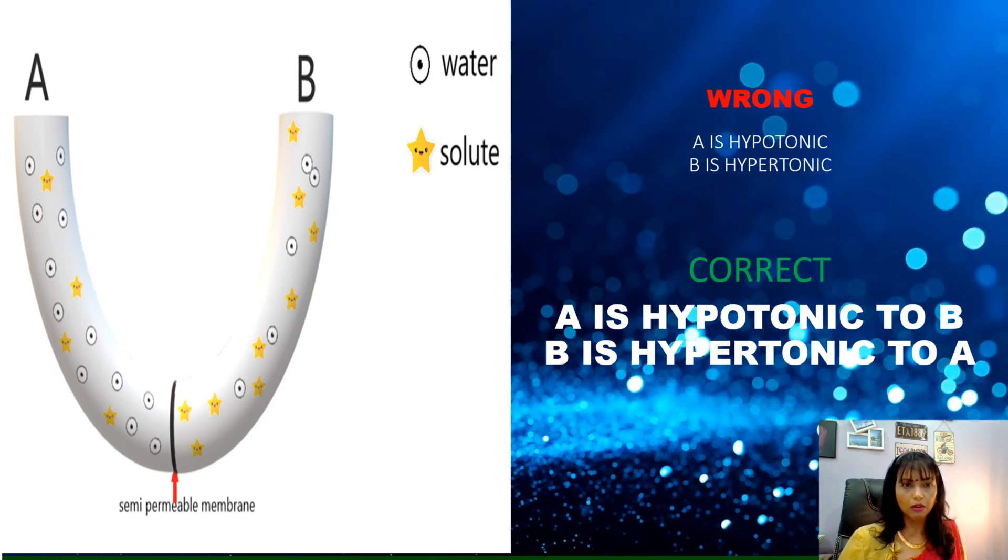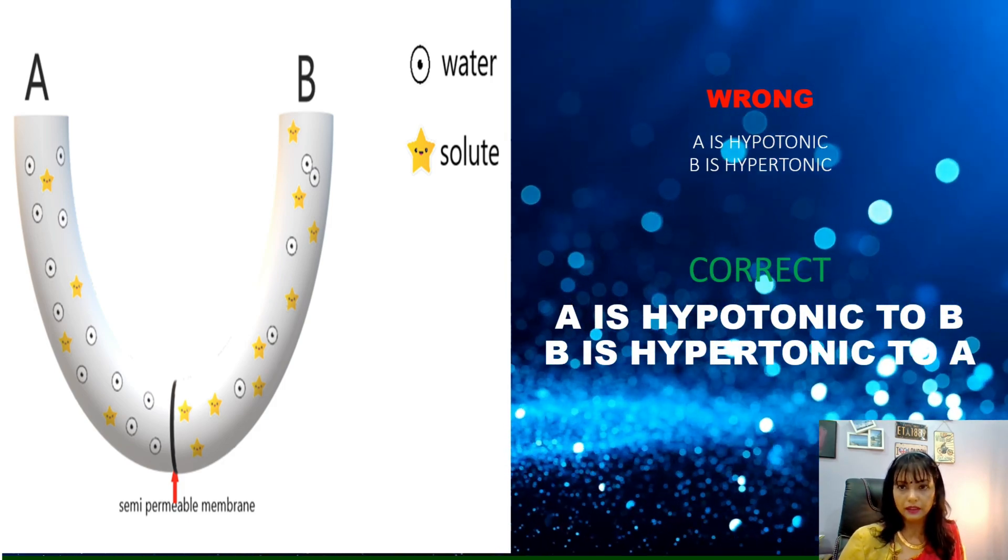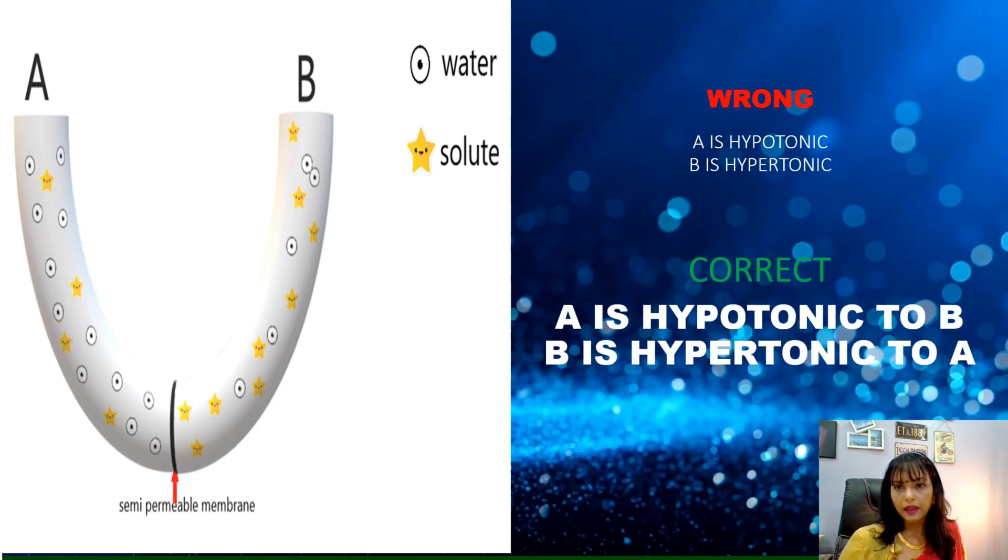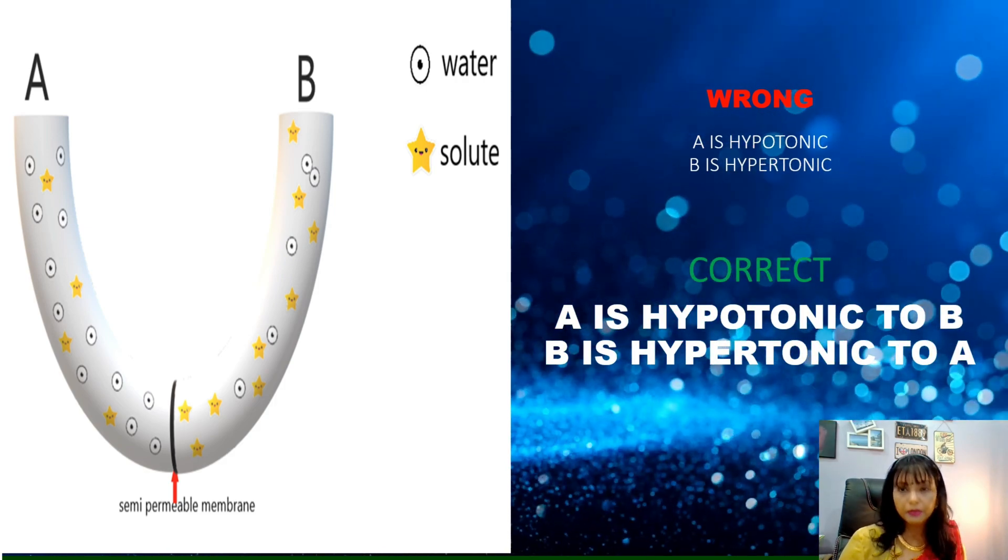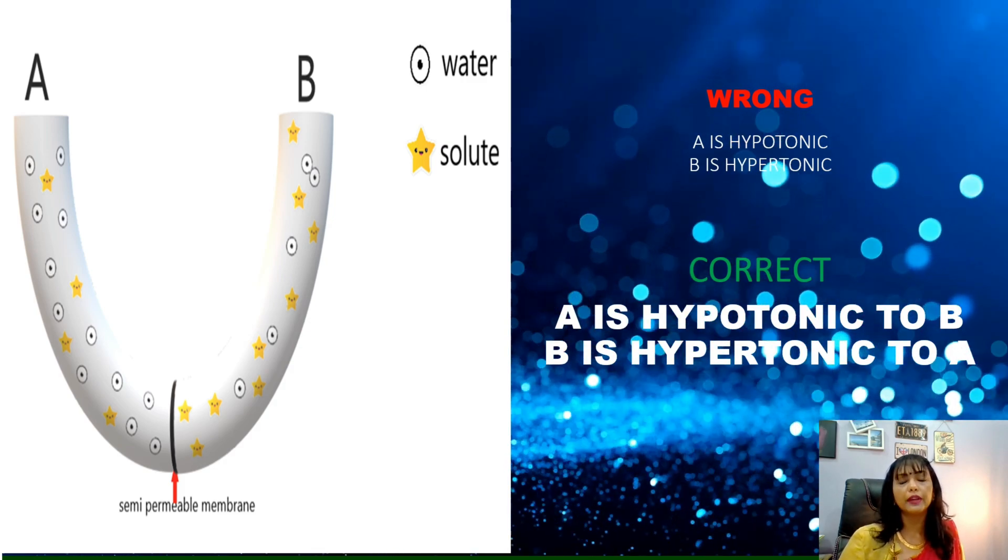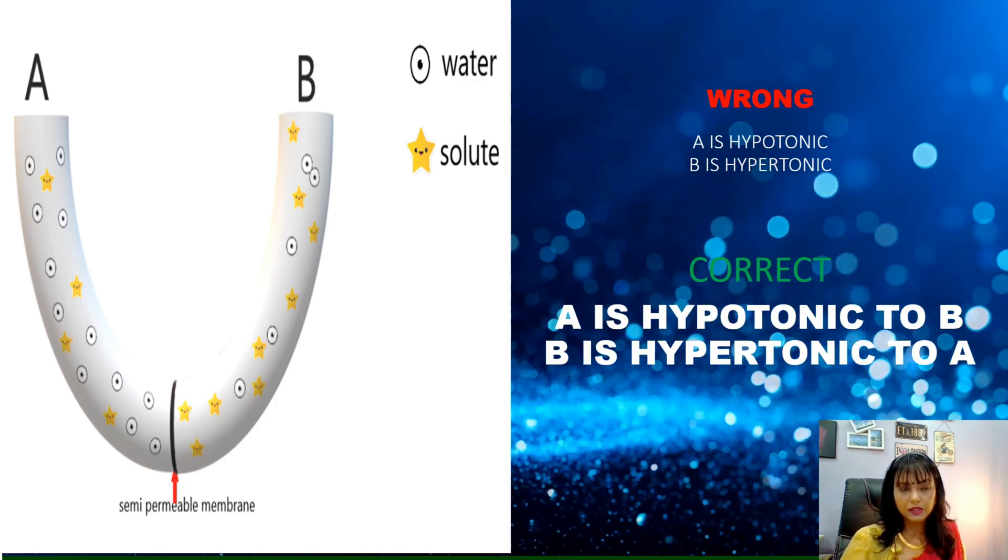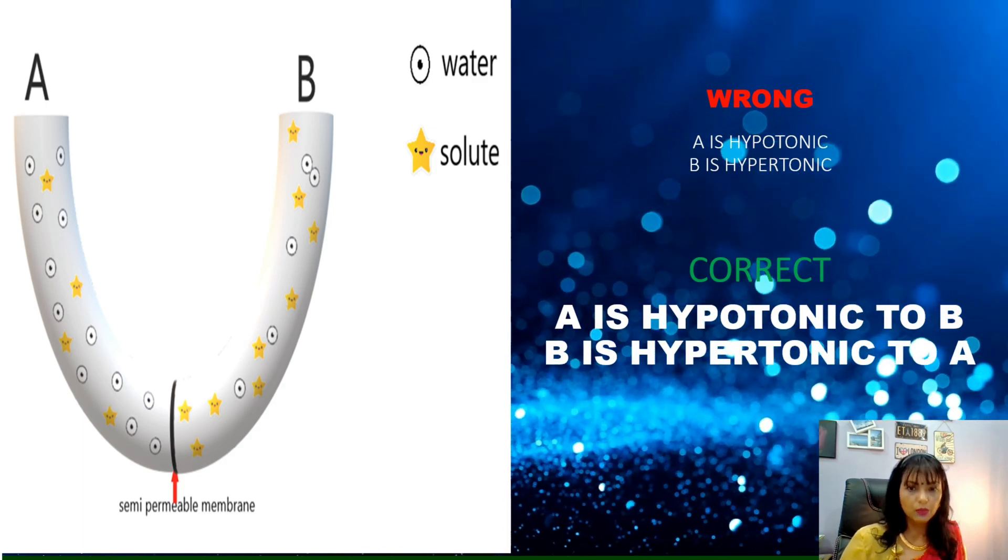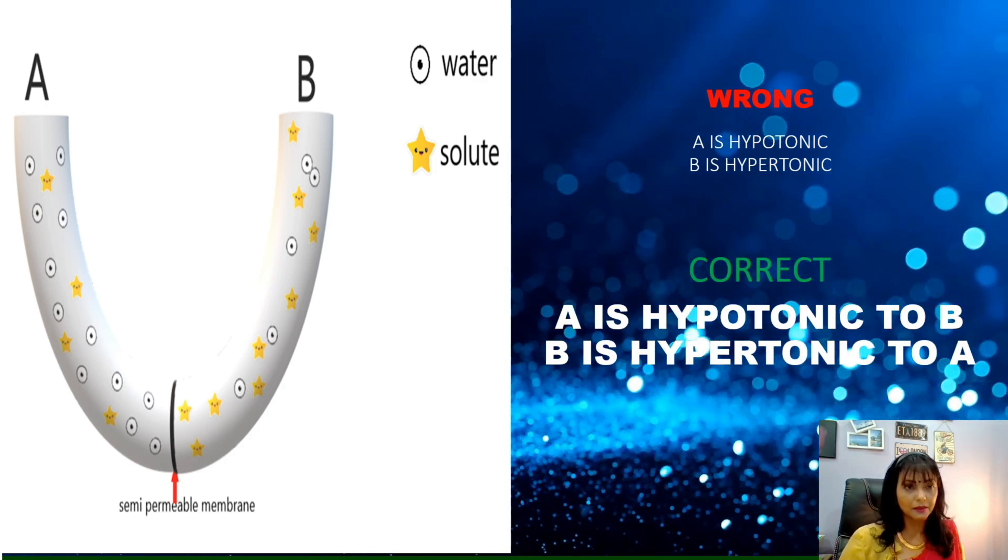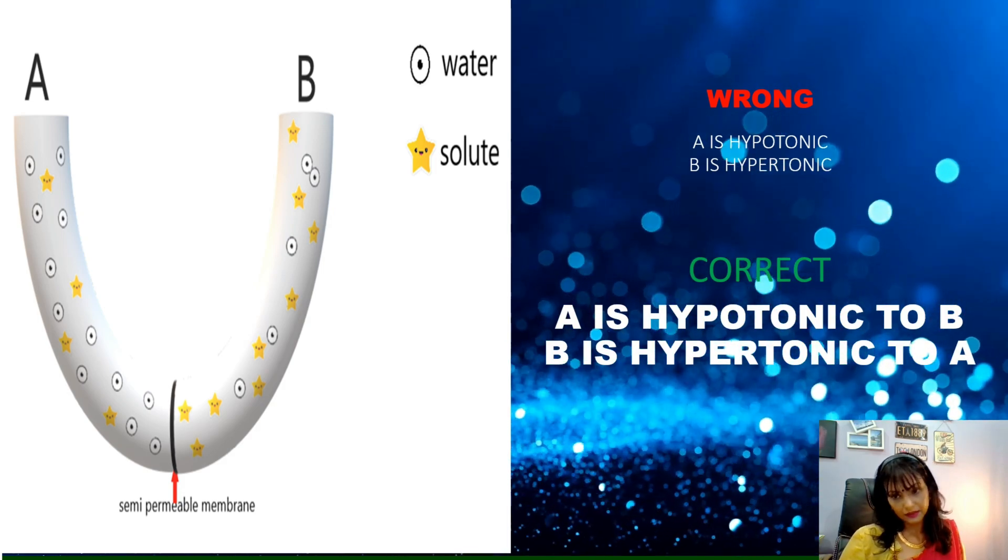I've also given you some wrong way of writing the one, the common sum of the students write. A is hypotonic, B is hypertonic. Oh, come on guys. No, you have to remember hypertonic, hypotonic are comparative words. This is what I'm trying to tell you here. Okay, A is hypotonic to B while B is hypertonic to A. So, this is the correct way of writing this.